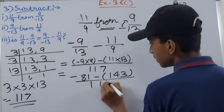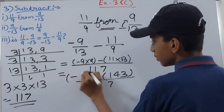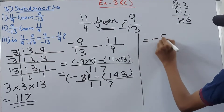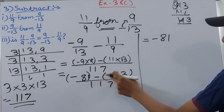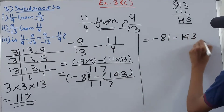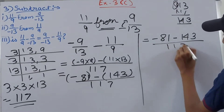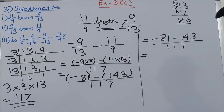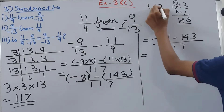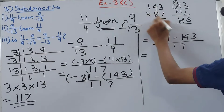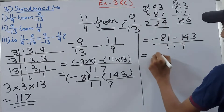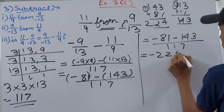Opening the brackets, we get −81 − 143 upon 117. Since both terms are negative integers, we add their absolute values: 143 + 81 = 224. So the result is −224/117.